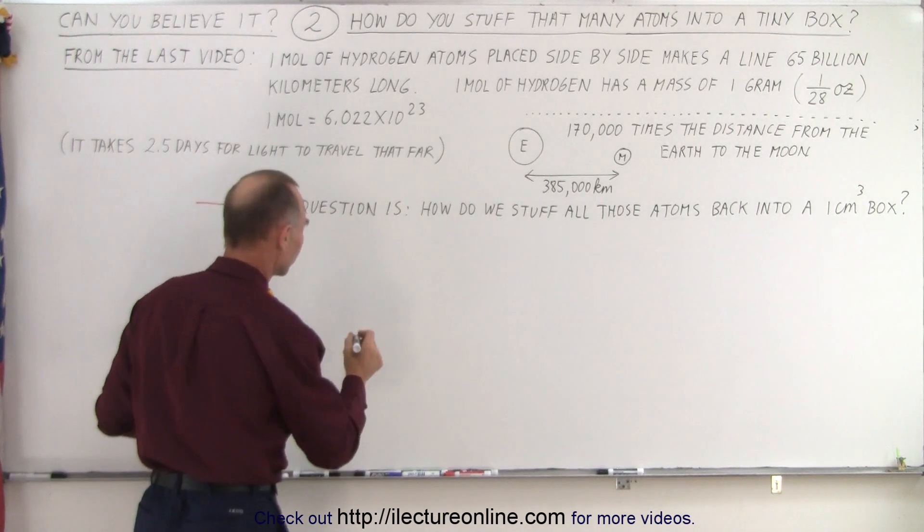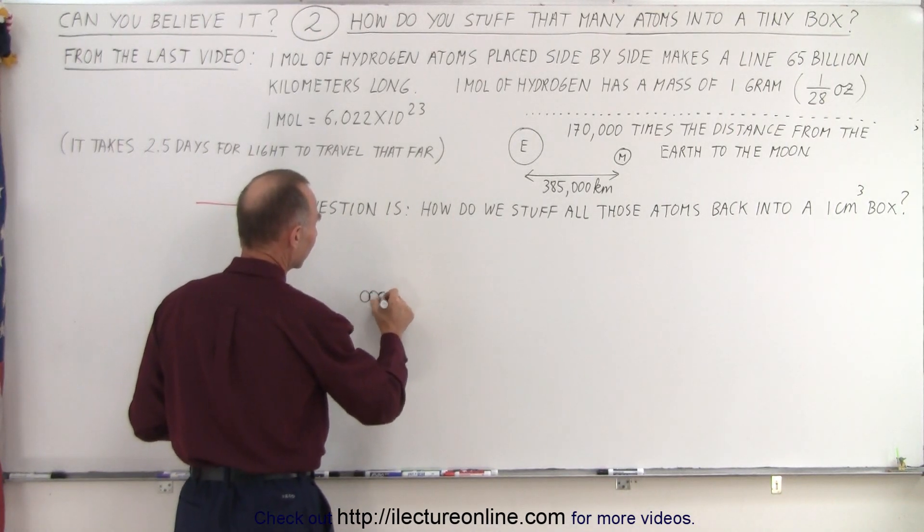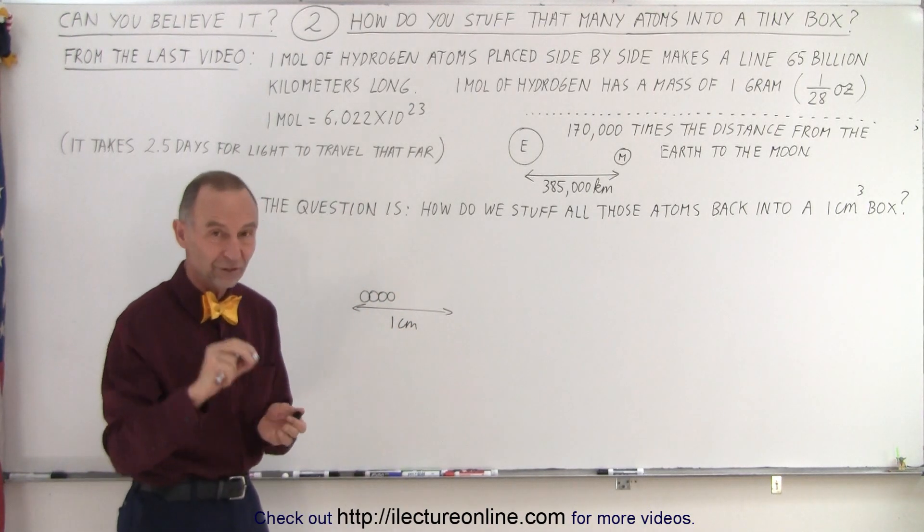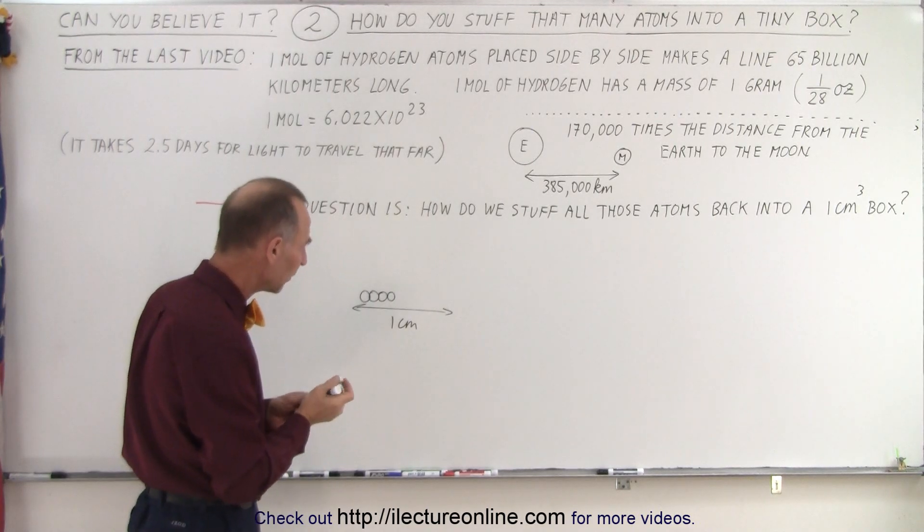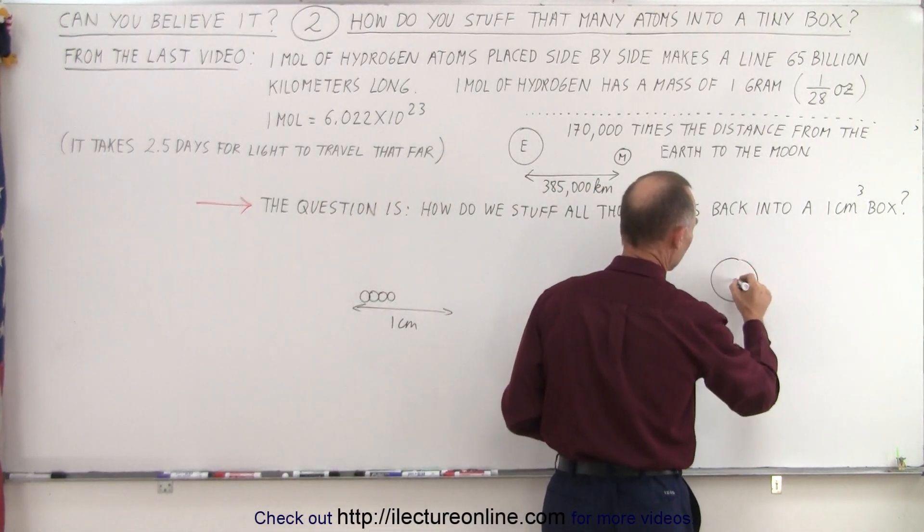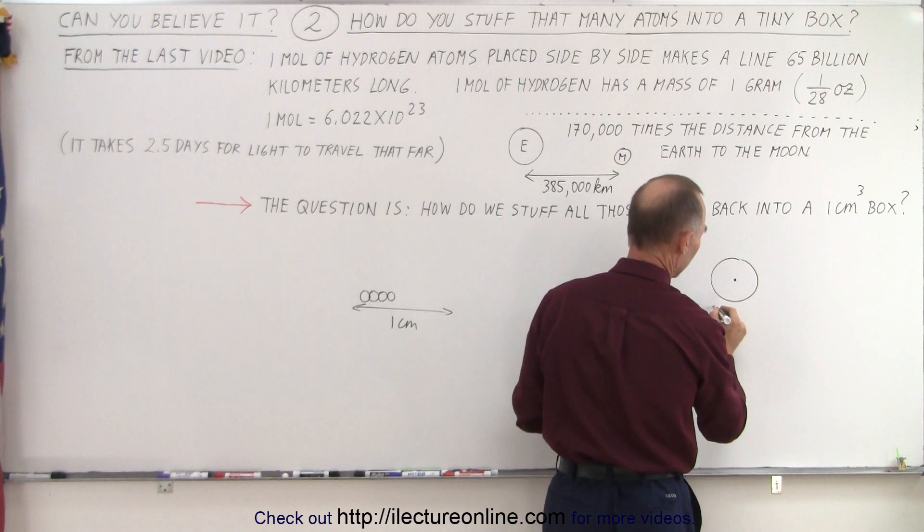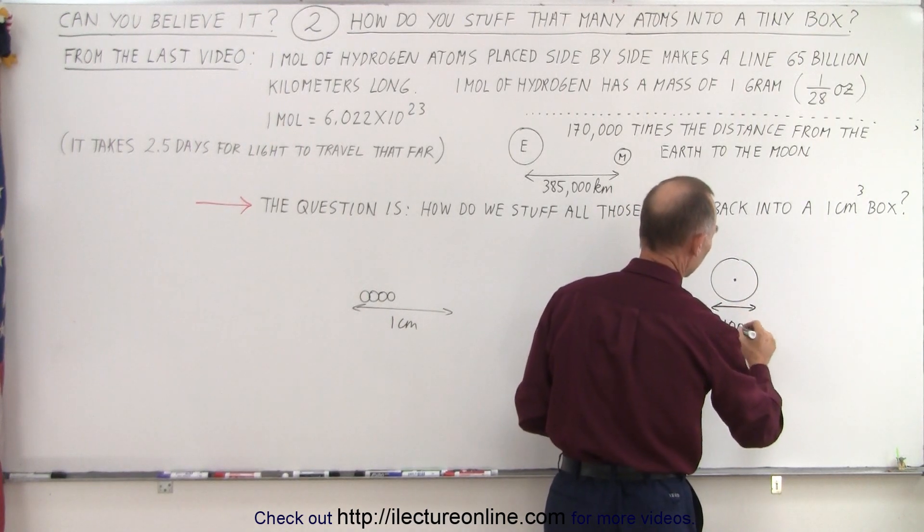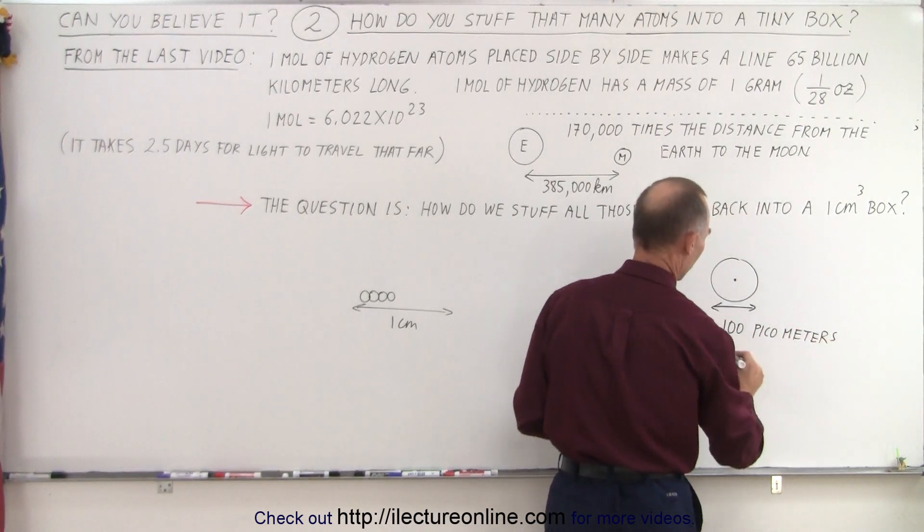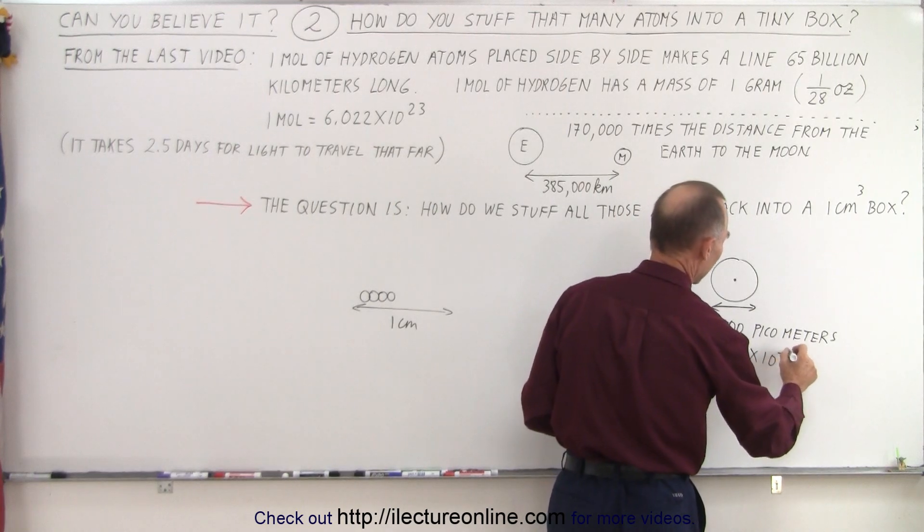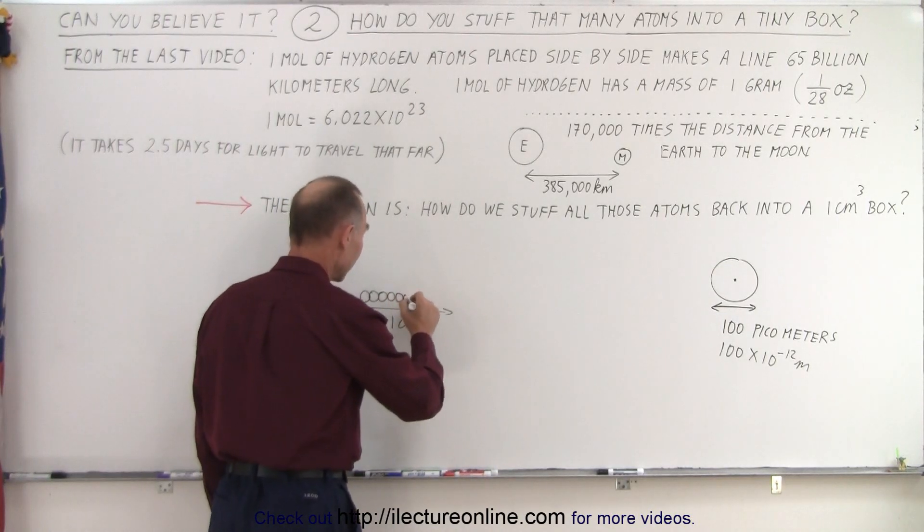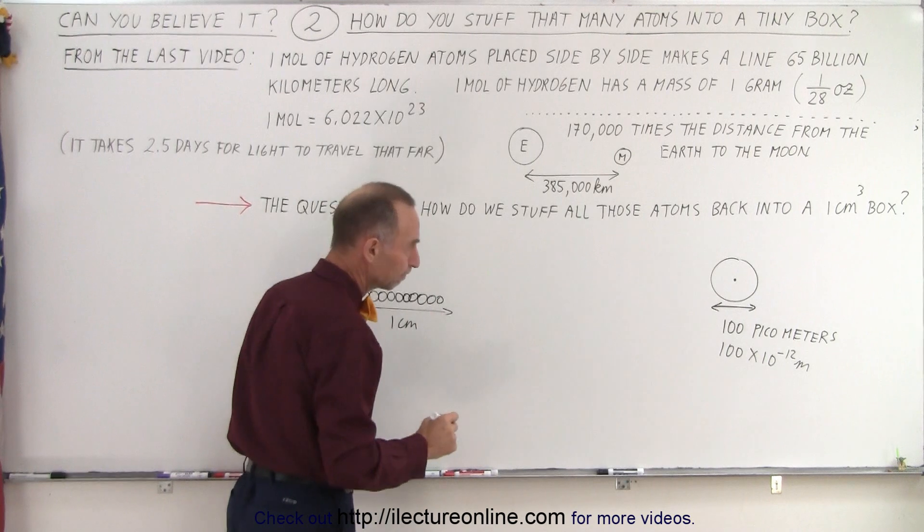What we can do is start lining up the atoms side by side until the distance in one direction equals one centimeter. Now we need to know how big one of those atoms is. A hydrogen atom has a diameter of 100 picometers. A picometer is 10^-12 meters, so that would be 100×10^-12 meters. How many of those can you line up side by side until you make a line one centimeter long?